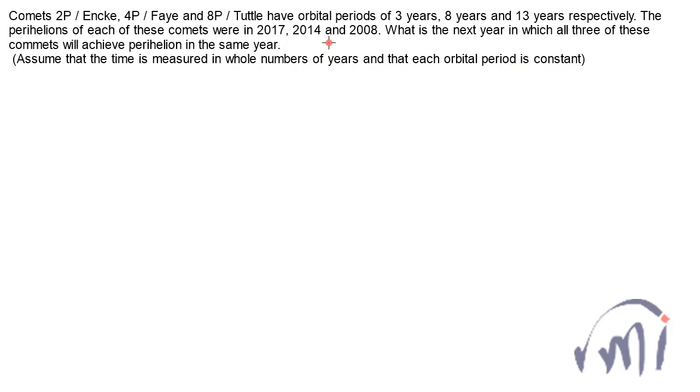So how to solve this problem? Here we are somewhere in the middle of the time period and we don't know when was the last time all three comets had perihelion in the same year. If we knew that, we could have just found the LCM and the problem would be simple. So how I solve it, I'll share with you.